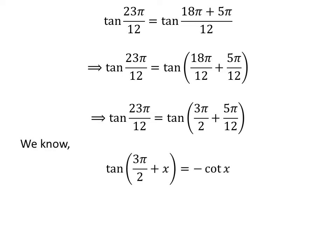We know the trigonometry identity: tangent of 3 times pi upon 2 plus x is equal to minus cotangent of x. The proof of this identity is given in the video in the upper right corner, and the link is also in the description. So, tangent of 23 times pi upon 12 is equal to minus cotangent of 5 times pi upon 12.